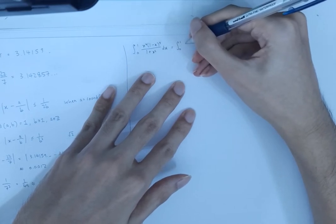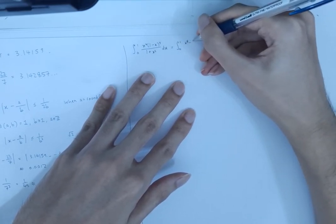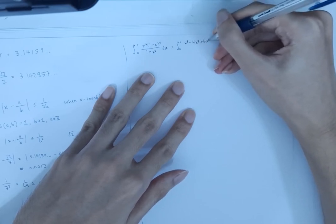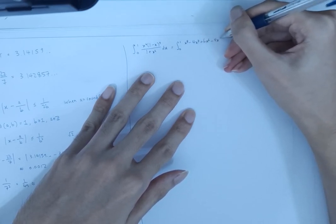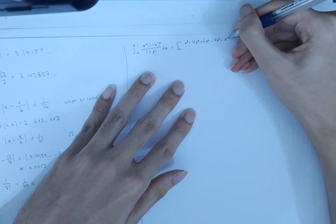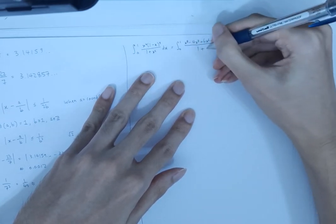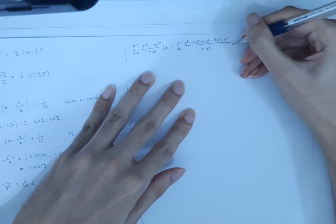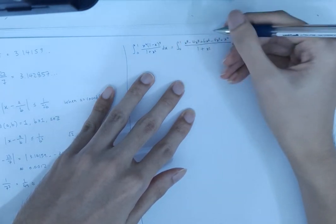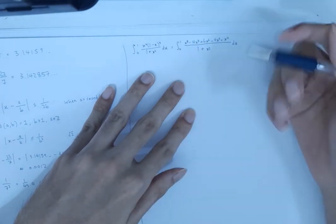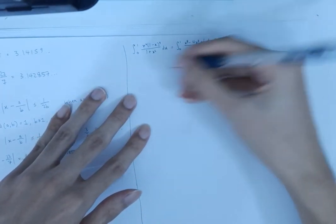If we expand the top, then we get x power 8 minus 4 x power 7 plus 6 x power 6 minus 4 x power 5 plus x power 4 divided by 1 plus x squared dx. And these are just the binomial coefficients for the 4th row of Pascal's triangle. And we do the long division.